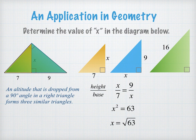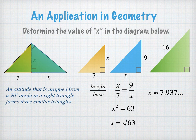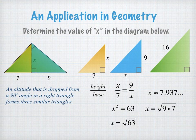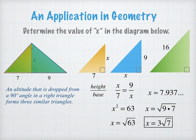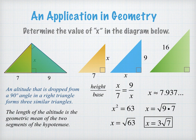To find x, we take the square root of 63. Unfortunately 63 is not a perfect square, so we get an irrational decimal. Typically instead of estimating an irrational number, we leave it in simplified radical form. So x equals the square root of 63, which equals the square root of 9 times 7. I can take the square root of 9 out of the radical and get x equals 3 radical 7. Notice that the altitude in the original right triangle is actually the geometric mean of those two segment pieces in the hypotenuse.